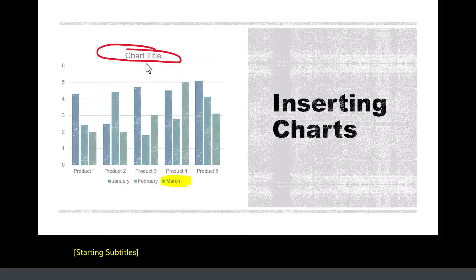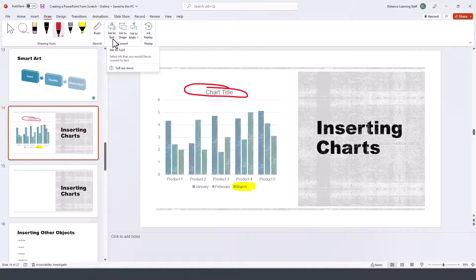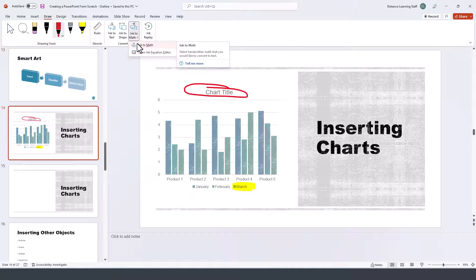There are also options here to do ink to text — basically transcribing what you write — or ink to math, where you utilize various mathematical equations. Your handwriting is converted into properly formatted mathematical equations.